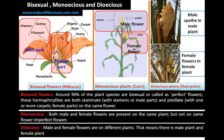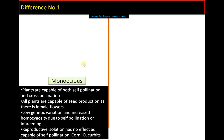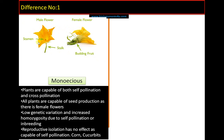Dioecious means male and female reproductive structures are formed on separate plants. For monoecious plants, the rule allows both self-pollination and cross-pollination — as seen in cucurbits, where male and female flowers are on the same plant. All plants are capable of seed production, genetic variation is very low, there is increased homozygosity, and reproductive isolation has no effect. Examples include corn and cucurbits.